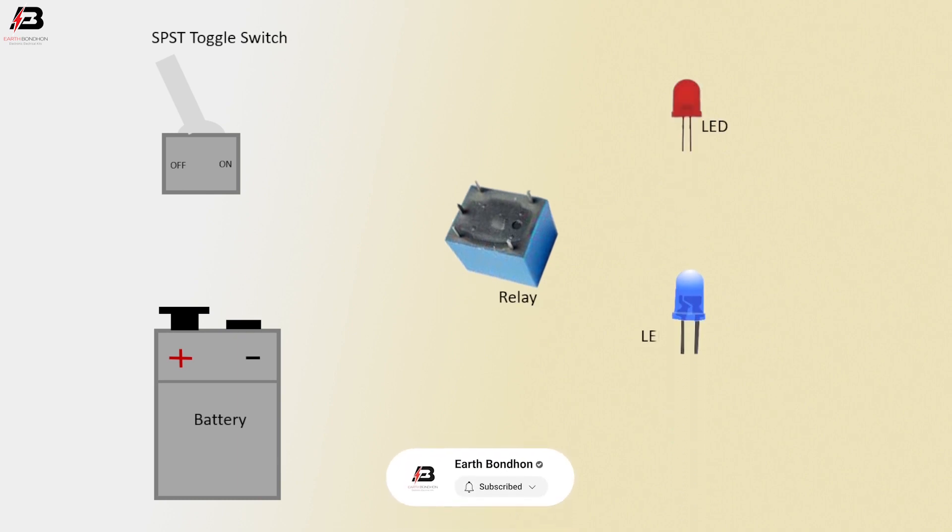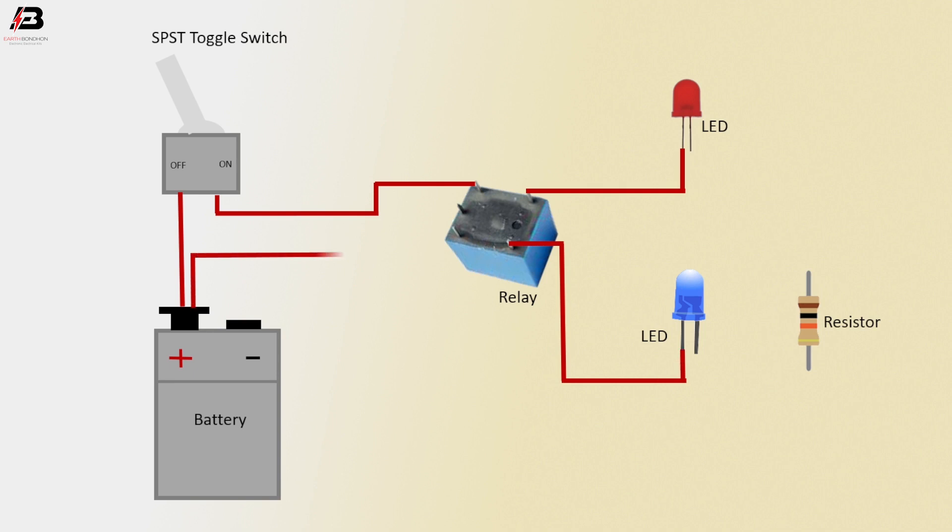Positive connection outgoing from relay to LED valve. Another connection outgoing from relay to another LED valve. Positive connection outgoing from battery to relay another point.